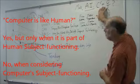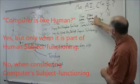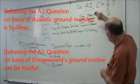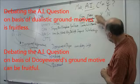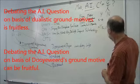So go back to this question. Can computers like a human? Operating according to this ground motive is fruitless. Operating according to this is fruitless. Operating according to this is fruitless. They might be fun, but they're fruitless. Operating according to this is fruitful.